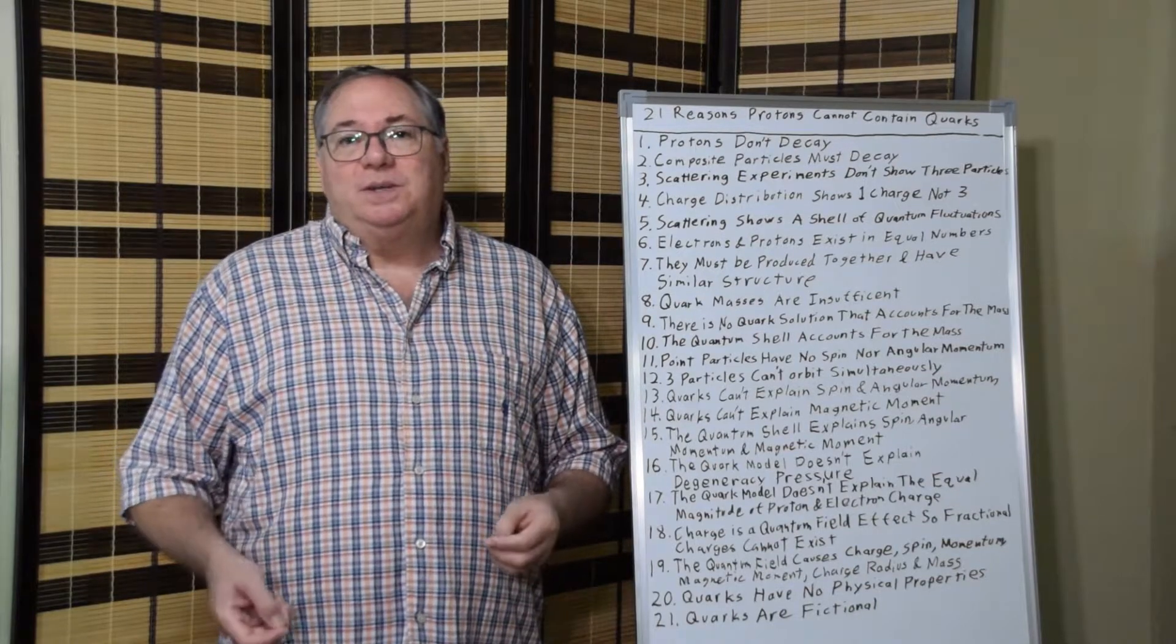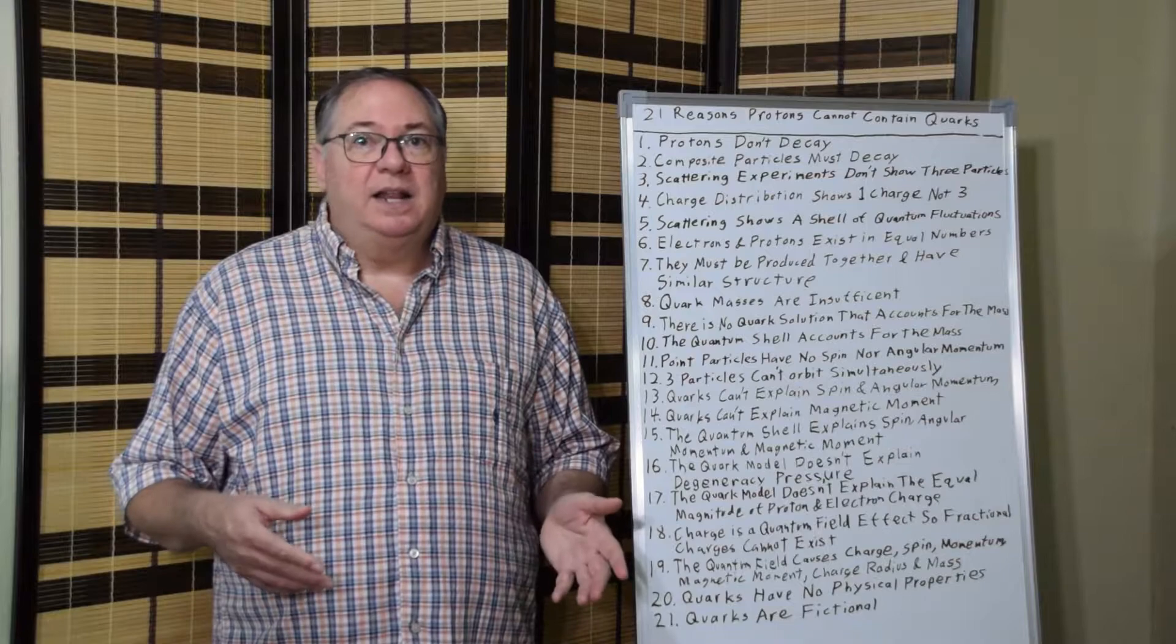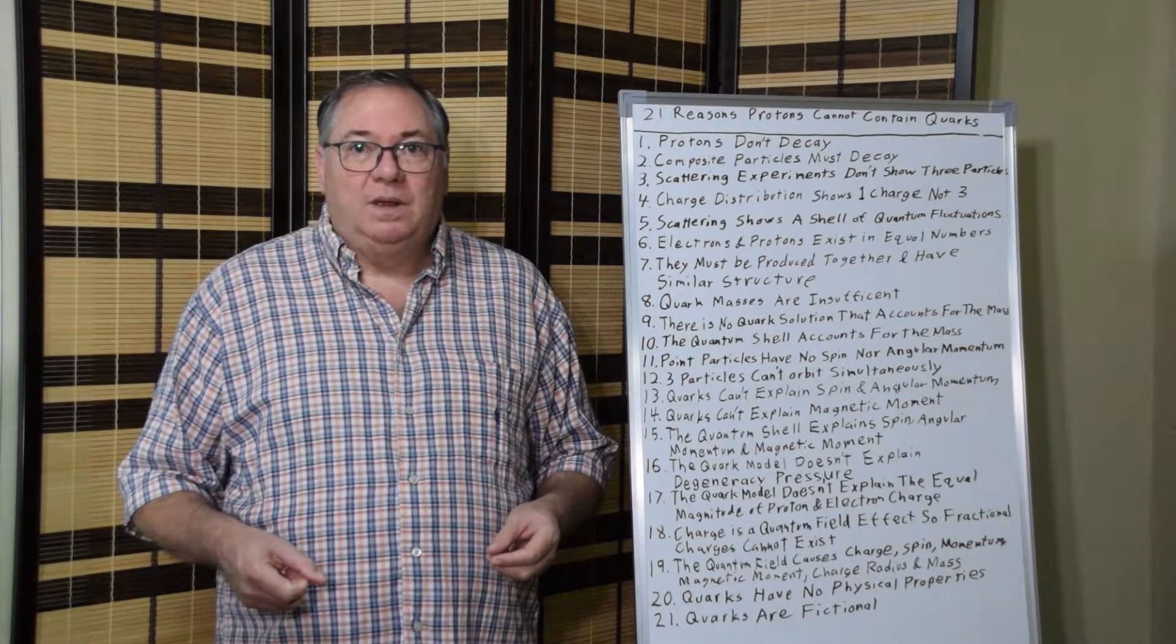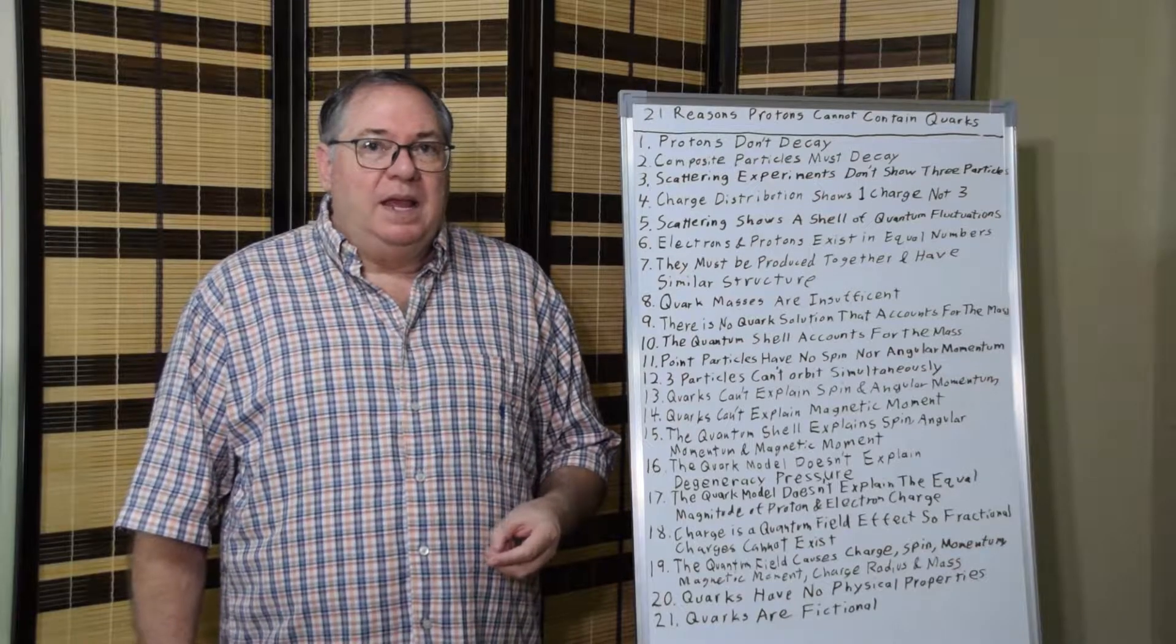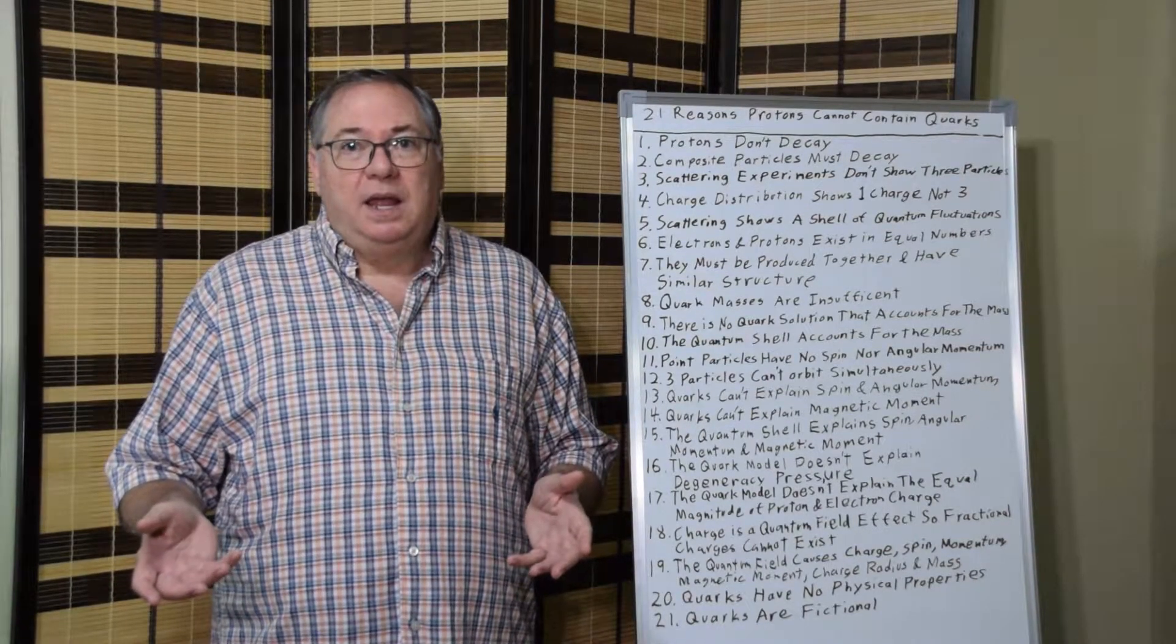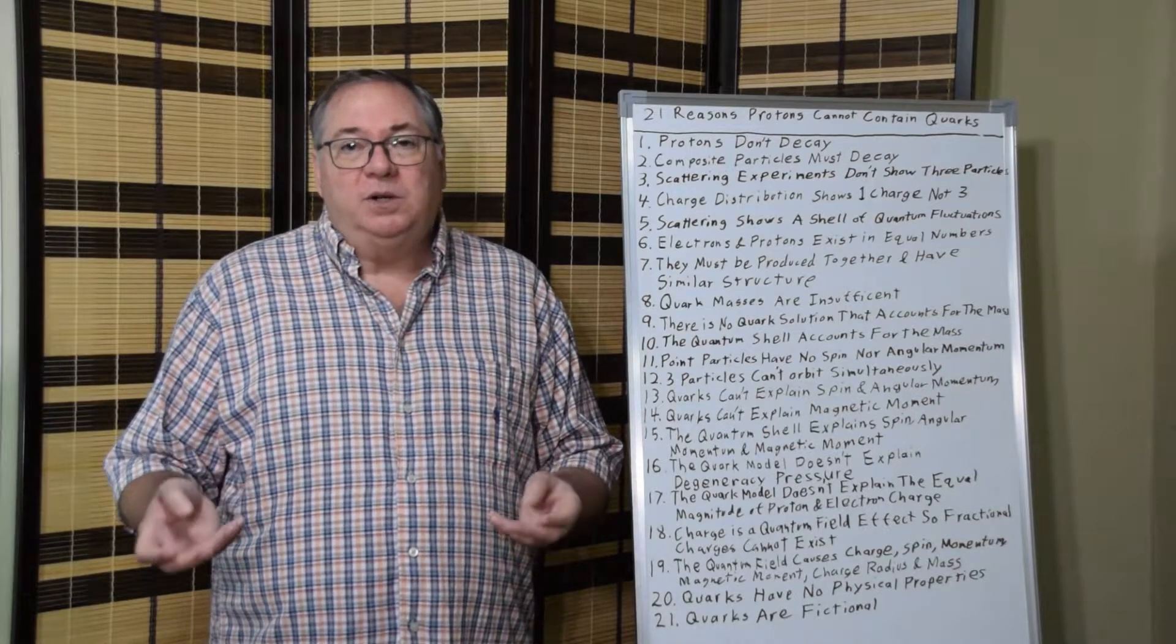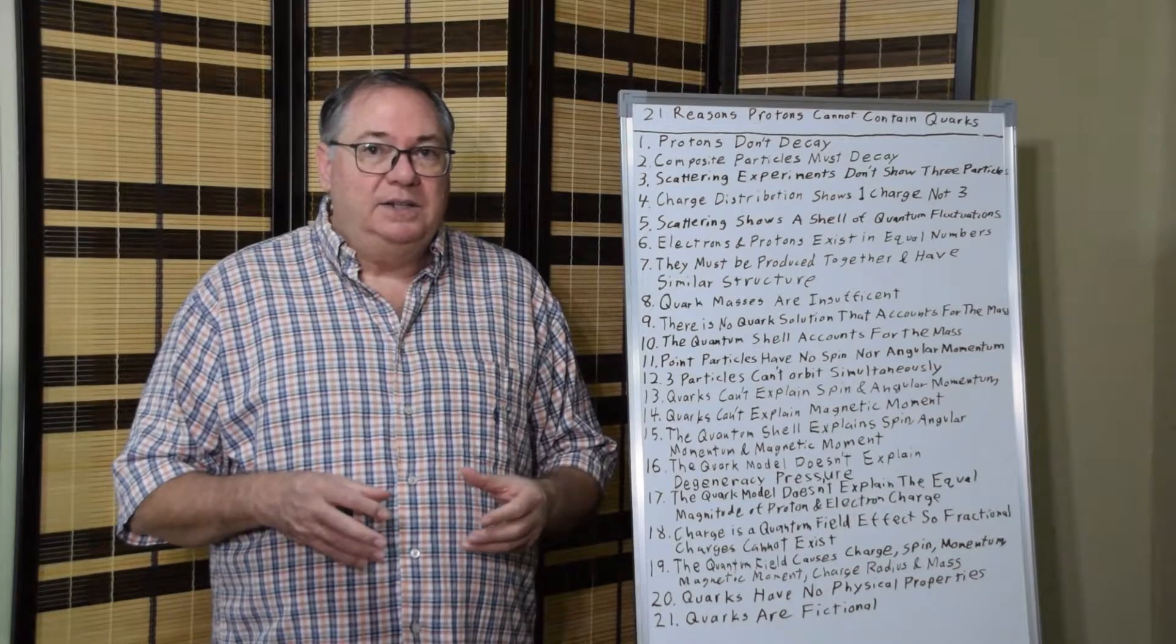And six, electrons and protons exist in equal numbers. And we know that because the universe is neutral. If not, the interactions between the stars and galaxies would be dominated by electrical effects. But that means seven, they must be produced together in order to have the same rate. And they must have the same structure. If you had independently a three-quark proton and an electron under the current models, and they were being produced by two separate reactions, there's no way that you would get an equal number of protons and electrons. Their emergence would be quite different and their production rates quite different. The only way for them to have the same production rate is if they're produced together.